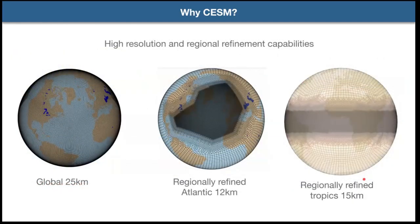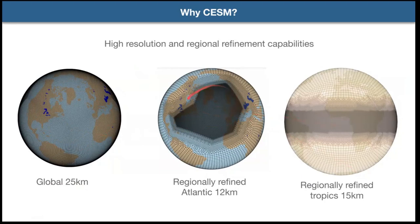We have capabilities for different resolutions. Our standard resolution is about 100 km by 100 km grid boxes, but in CESM1 and hopefully CESM3 there will be opportunities for global higher-resolution simulations down to 25 km in the atmosphere and one-tenth of a degree in the ocean. There's also regional refinement capability — here are a couple of examples: a regionally refined North Atlantic case and a tropical belt case exploring how different resolutions impact things.